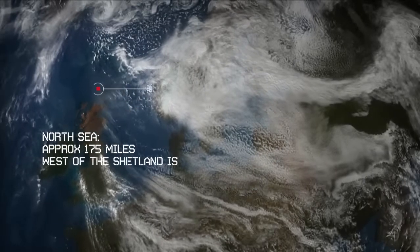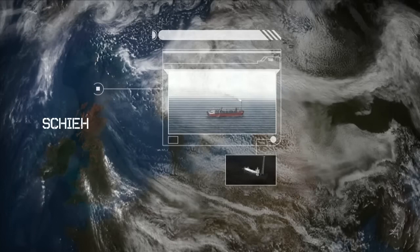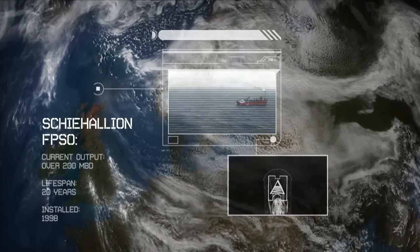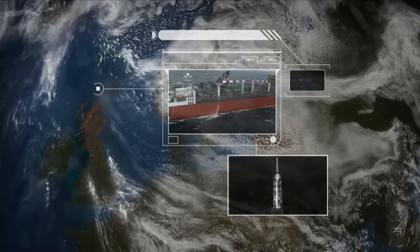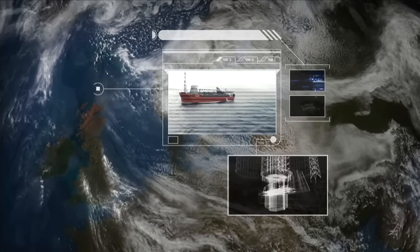Located 175 miles west of the Shetland Isles, the Schehalian FPSO has been producing oil and gas since 1998, when it was installed by BP and its partners to develop the Schehalian and Loyal Fields after they were discovered in 1993.